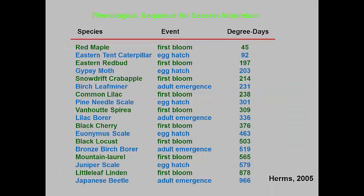Here is a shortened version of the early season part of Dr. Herms' phenological sequence. You can see that the exact degree days between the plant events and insect or mite activities don't exactly match, but their sequence remains the same year after year. So if you were waiting to control pine needle scale, full bloom of common lilacs would be a good phenological indicator of when you should apply those treatments.